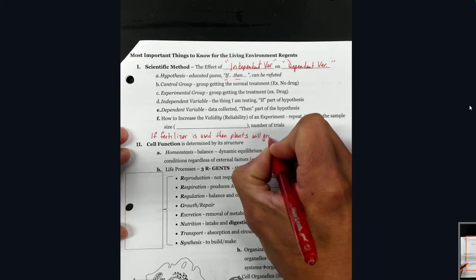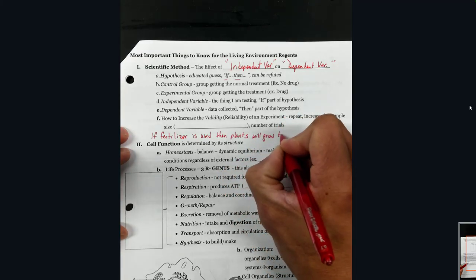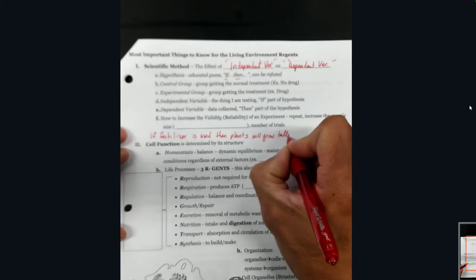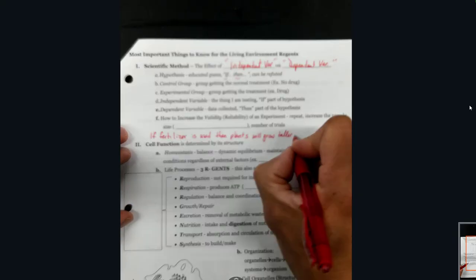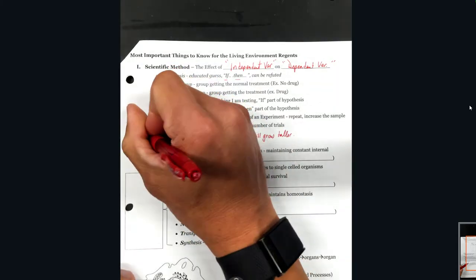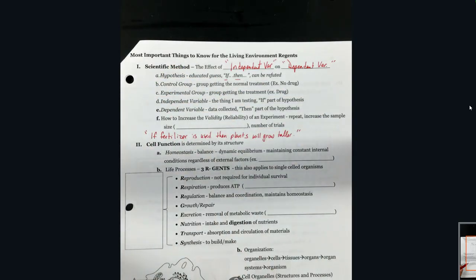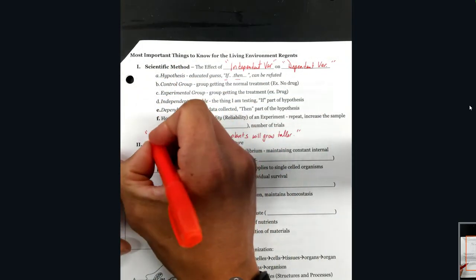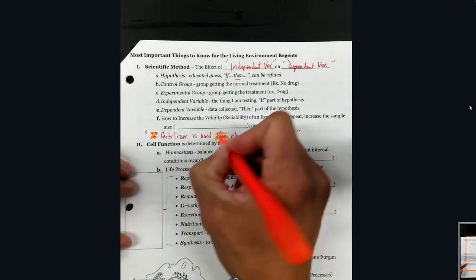We'll use this example to break down the different parts of our scientific method. This is our hypothesis, and as you can see it's characterized by an 'if' and a 'then' — there's our if-then statement.